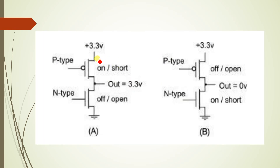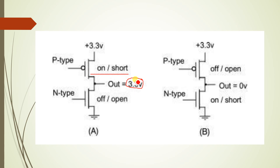Let's look at this illustration of Category A and Category B. In Category A, on the P-type or positive type, which is the on state — when the switch is in the on state, there will be a possible current that will flow to the output. As observed in the illustration, there will be 3 volts at the output of the on state switch.